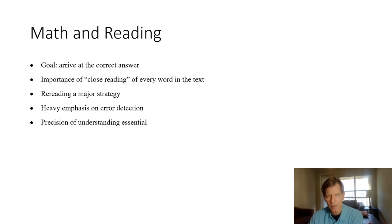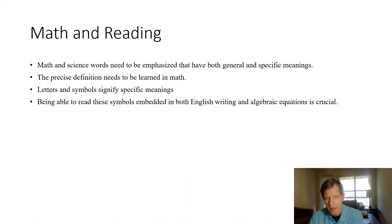When we talk about reading in mathematics, of course the goal is to arrive at the correct answer, and so it's very important to closely read the text, including every word in the text, to make sure that you understand the vocabulary words—these math content vocabulary words—correctly as they're intended to be used. Rereading is a very important strategy to make sure that you're understanding the directions and the words correctly. Precision is so important in both words as well as symbolic meanings that we get into with math and science.